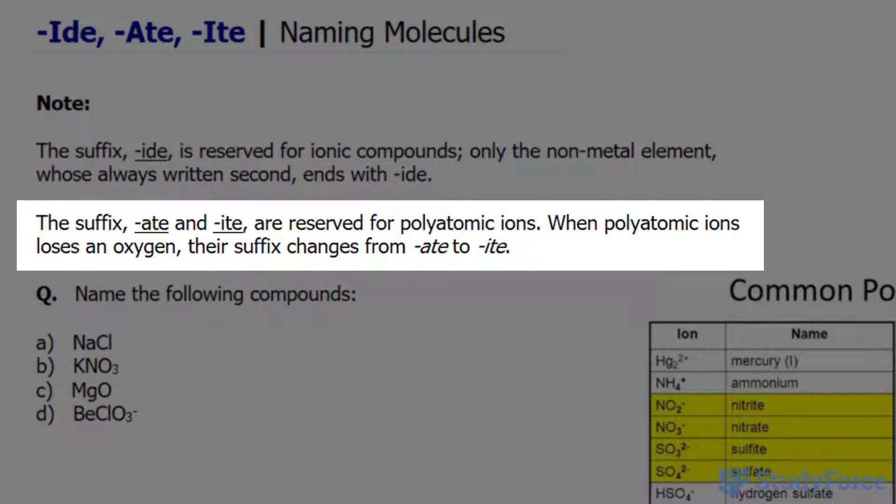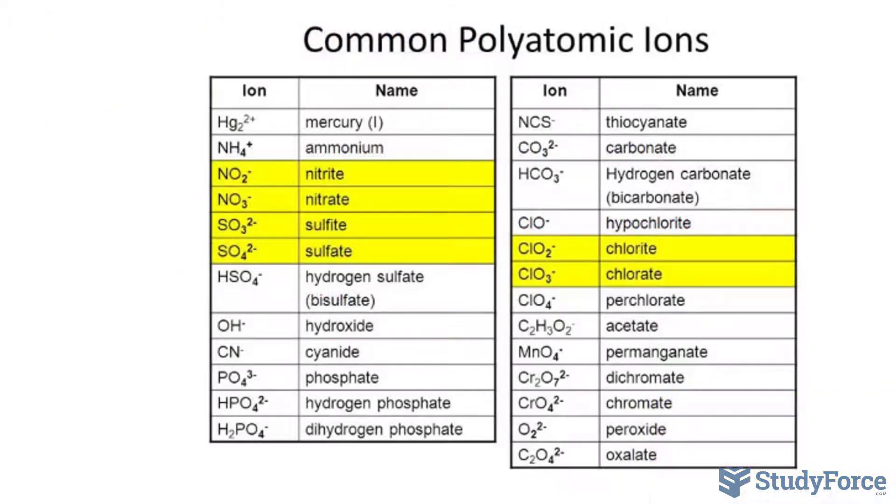The suffixes -ate and -ite are reserved for polyatomic ions. Polyatomic ions are clusters of elements that always stay intact, and some examples are shown in this table.